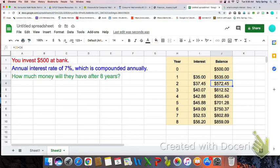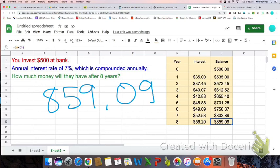This shows me that after 8 years, my balance in my investment here is going to be $859.09. So over 8 years, I've made about $350, which is pretty good.